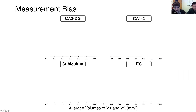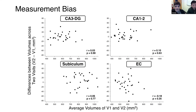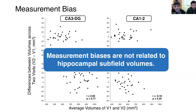We also asked whether measurement is biased depending on the volume or size of the subfields being estimated. To answer this, we calculated the average volume between two visits and the difference score between visits, then calculated Pearson correlation. We found no significant results, which is good news — it means measurement biases are not related to hippocampal subfield volume.